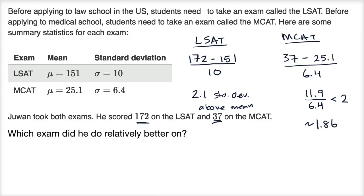So relatively speaking, he did slightly better on the LSAT — he scored more standard deviations above the mean, although it is close. He did roughly two standard deviations in both cases, but to be precise, he did 2.1 standard deviations on the LSAT versus approximately 1.86 on the MCAT. In everyday language you'd probably say these are comparable, but if one were three standard deviations and the other one, then you'd clearly say he did better on the LSAT.